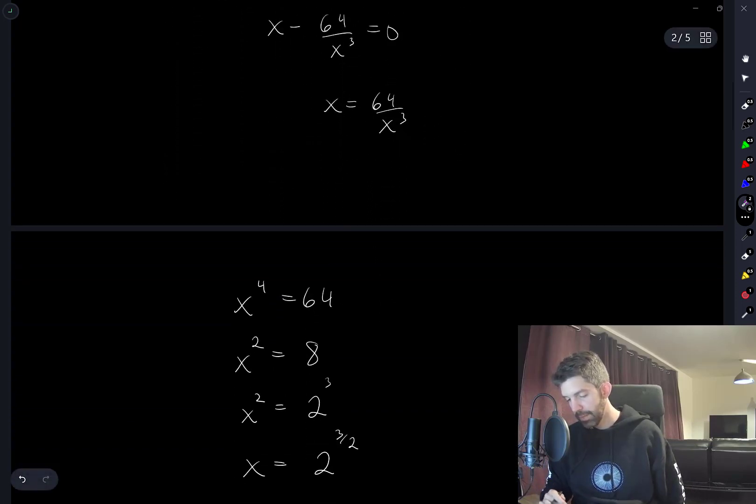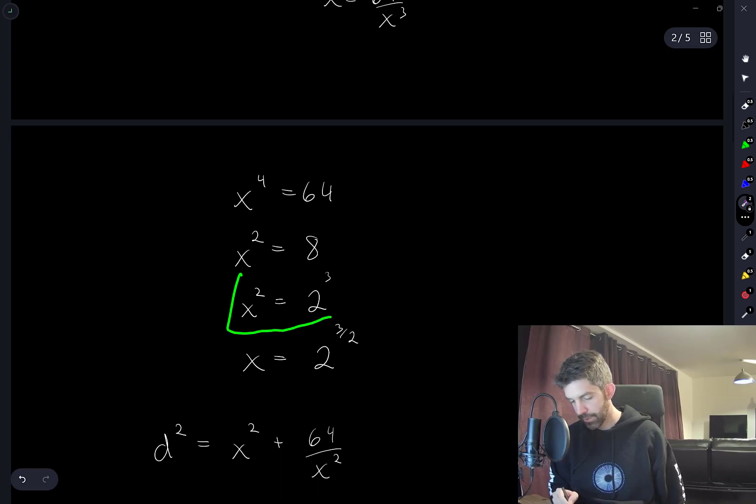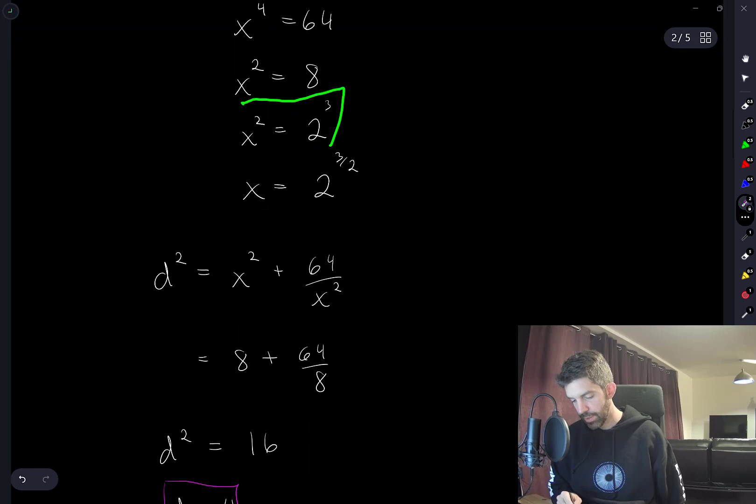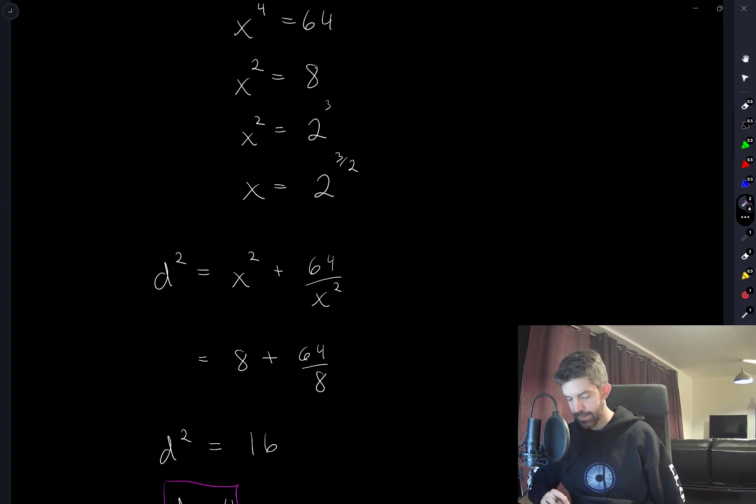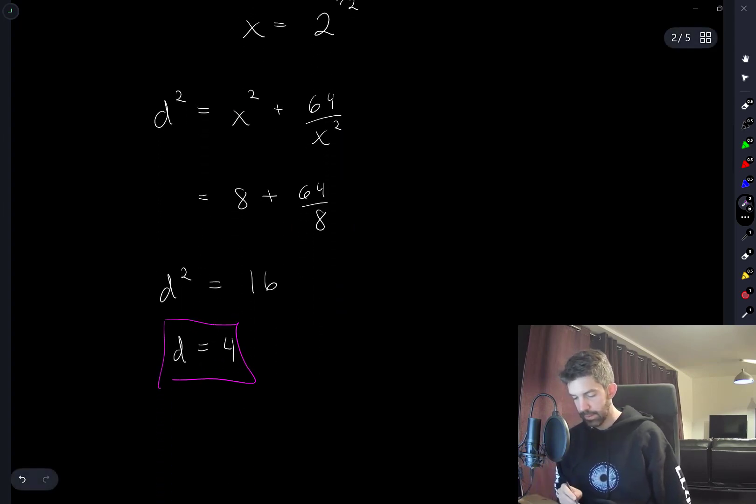It actually ends up being more convenient to stop here and just solve for x squared, because we have the distance written in terms of x squared. So I just substitute x squared equals 8 in both of these. And I end up with, that's 8, 64 divided by 8 is 8. So d squared is 16 and d is equal to 4.